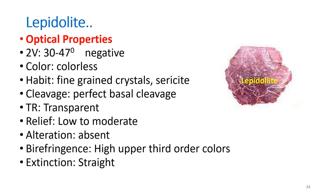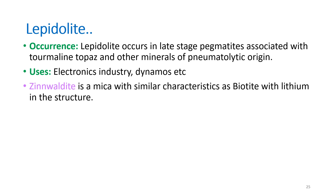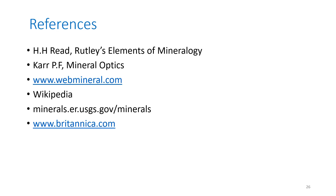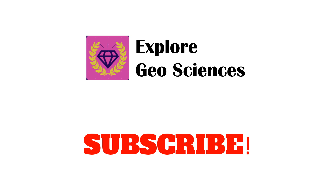Lepidolite: cleavage — perfect basal cleavage (001); luster: pearly; transparent mineral; hardness 2.5 to 4; specific gravity 2.8 to 2.9. Optical properties: 2V = 30 to 47 degrees; optically negative; colorless; fine-grained crystals known as sericite; perfect basal cleavage; low to moderate relief; no alteration observed; birefringence high upper third-order; straight extinction. It occurs in late-stage pegmatites associated with tourmaline, topaz, and other pneumatolitic minerals. Used in the electronics industry. A related variety, zinnwaldite, is a mica with similar characteristics to biotite but contains lithium.